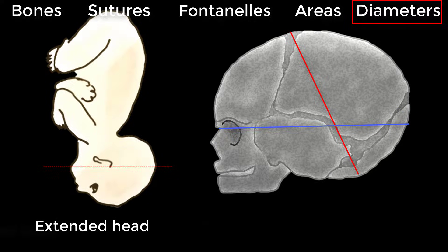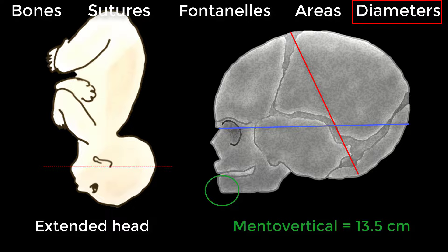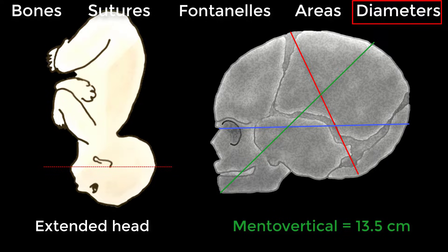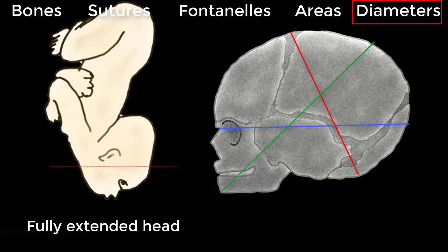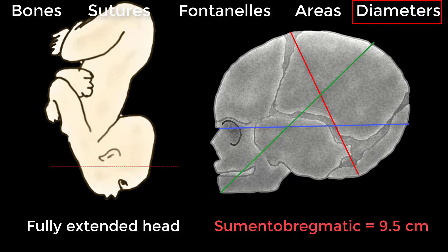With an extended head, the presenting part is the brow and the presenting diameter is the mento-vertical, which extends from the midpoint of the chin to the highest point on the sagittal suture, measuring 13.5 cm. With a fully extended head, the presenting part is the face and the presenting diameter is the sub-mento bregmatic diameter, extending from the junction of the floor of the mouth with the fetal neck to the center of the bregma, measuring 9.5 cm.